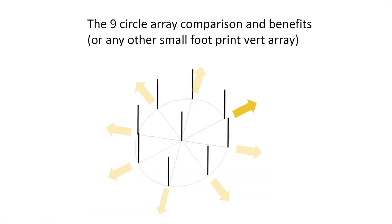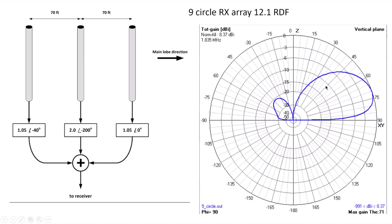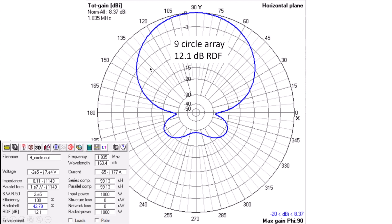I'd also like to talk about my nine circle array and compare it to beverages. In 4NEC2 it's very easy to model. This image on the left is from the YCCC array manual designed by John W1FV. It describes the ideal phasing for the three elements that make up the nine circle array. Putting that into the modeling program, we end up with an RDF of 12.1 — pretty good — and a very nice clean pattern from this small three-element array. This is the azimuth plot of that array.